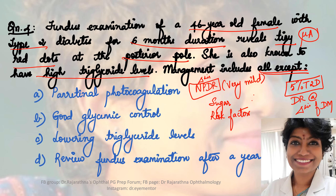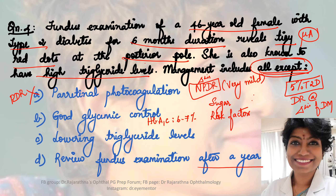The question asks: management includes all except? Option A is pan retinal photocoagulation - we know this is done only for PDR, so our patient with very mild NPDR does not need it. Good glycemic control means HbA1c between 6 to 7 percent, which is important to control or delay progression of diabetic retinopathy. Lowering triglyceride levels is indicated since high lipid levels are a risk factor. Annual fundus examination is required. The answer is option A - PRP.